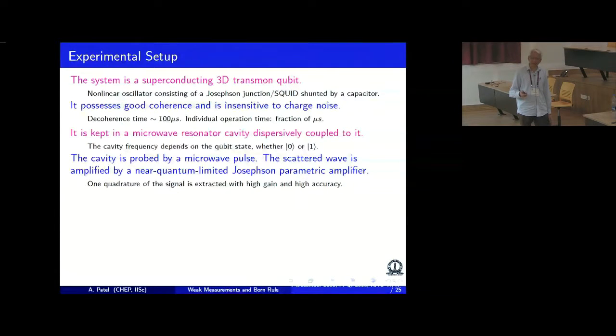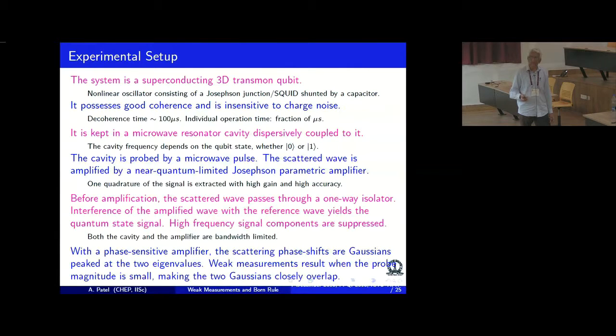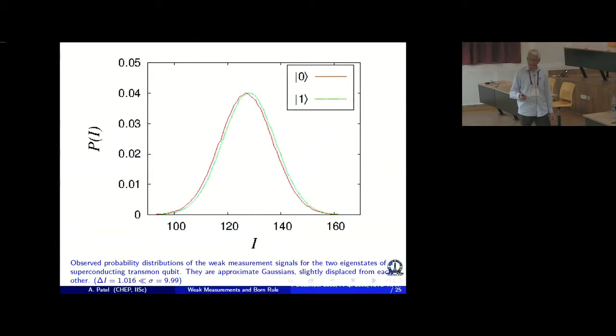So now let me go to the experimental setup and show you the result. The experiments were done on 3D transmon qubits dispersively coupled to a microwave cavity. Vijay Raghavan gave a talk here a couple of days back. And it gives a signal which is amplified with a phase-sensitive amplifier running very close to the quantum limit. Weak measurements result when the probe magnitude of this amplifier is very small and the two Gaussians overlap. And this is a kind of analog of the Stern-Gerlach measurement. In this phase, there are two peaks, but the two peaks are very highly overlapping. The width is much larger than the separation between the two peaks.